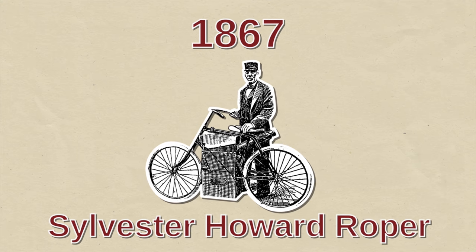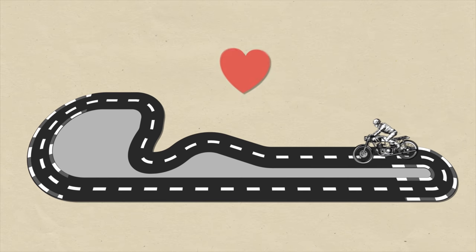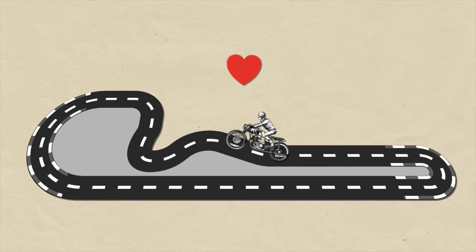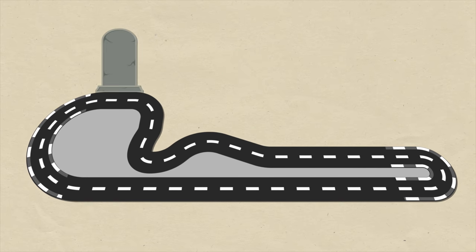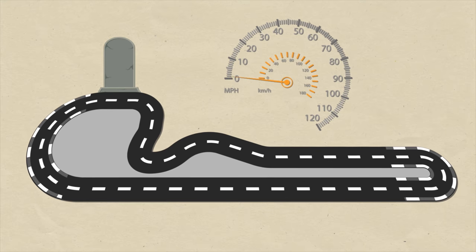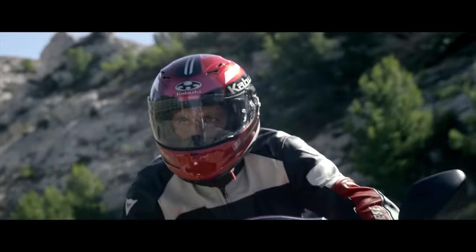The Roper Velocipede was powered by steam. Its inventor sadly died from a heart attack in 1896 in the saddle of his motorcycle while racing. Nobody knows if it was the heart attack that caused him to topple over or the top speed of 40 miles an hour caused him to have a heart attack. Good luck on a modern motorcycle at 200 miles an hour.